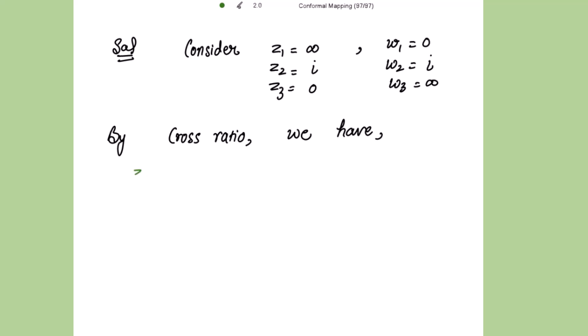So this is z minus z1 over z minus z2 into z2 minus z3 over z3 minus z equal to w minus w1 over w1 minus w2 into w2 minus w3 over w3 minus w.